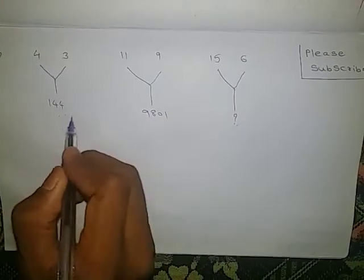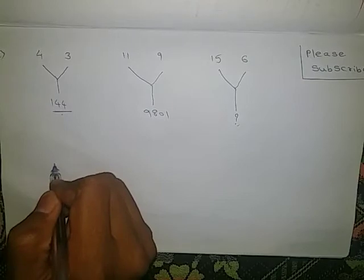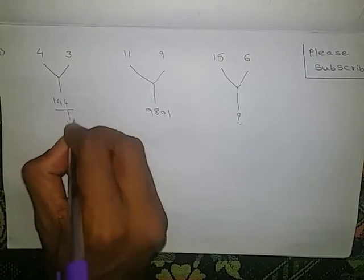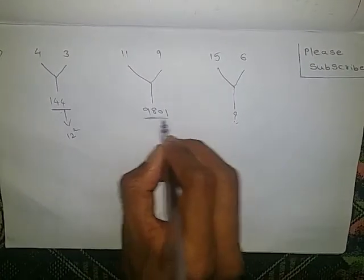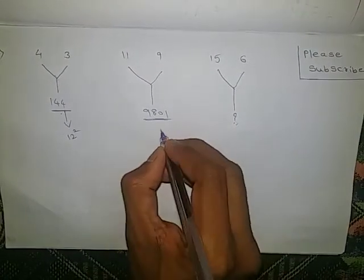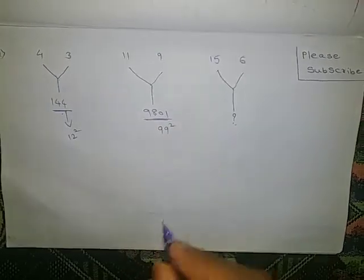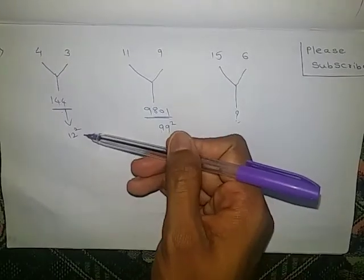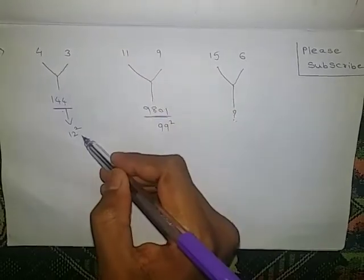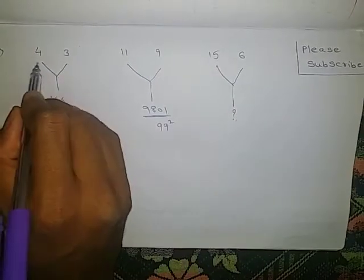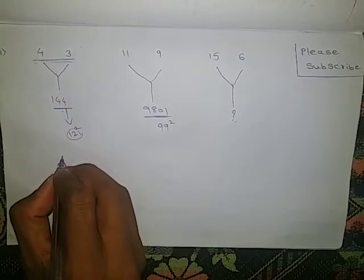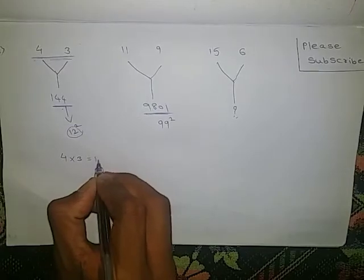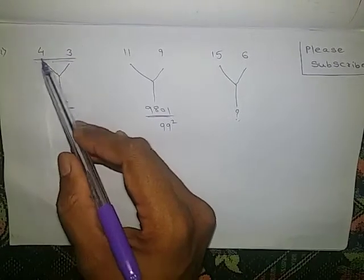If we observe this number 144, we will get immediately one idea — that is 12 squared. If we observe 9801, we will get one idea — that is 99 squared. So from this solution, we go once: 12. What we need to do with these two numbers to get 12? That is 4 into 3, 12.